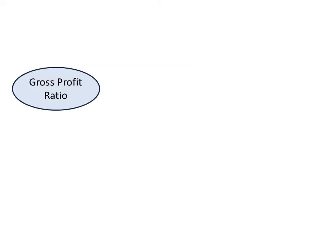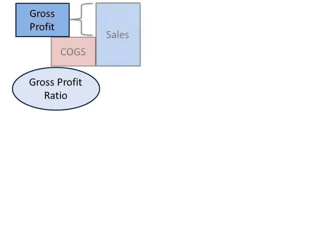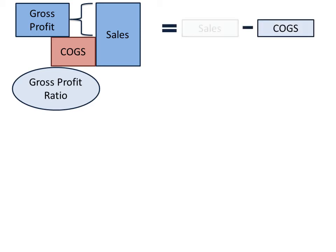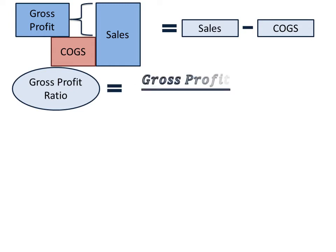Gross profit is an excess of sales over cost of goods sold. That means it is calculated by deducting cost of goods sold from sales. The ratio is calculated by dividing gross profit by sales, multiplied by 100. It is usually expressed in percentage.